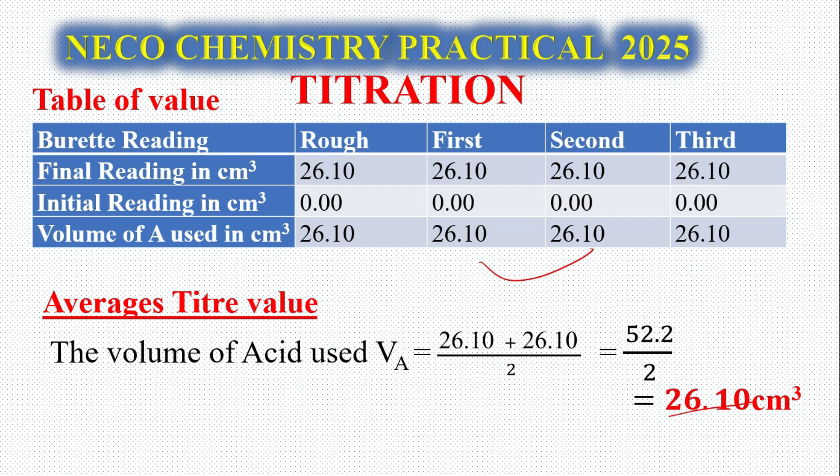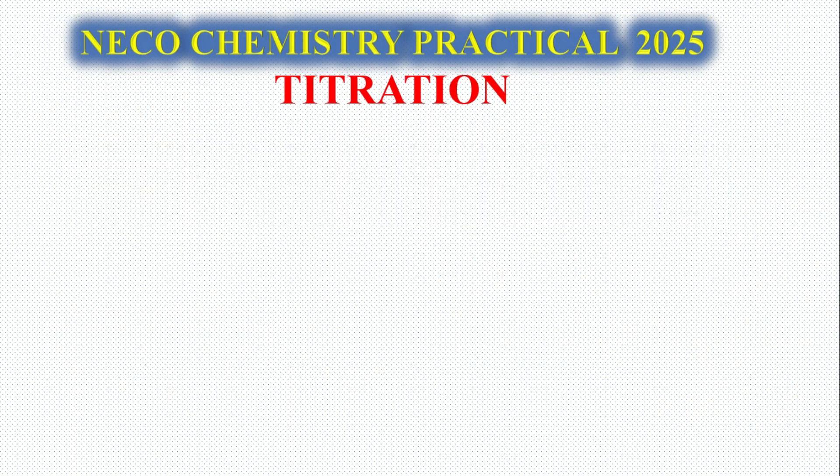In NECO, we mark this table as follows: three marks, three marks, one mark, and one mark. That's eight marks for the table. In NECO, if it's WAEC it's 10 marks, but for NECO it's eight marks.